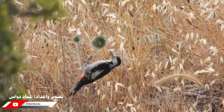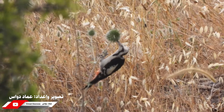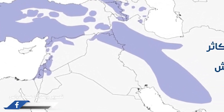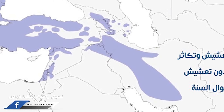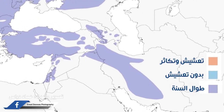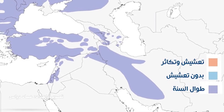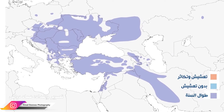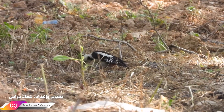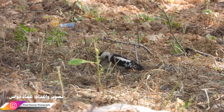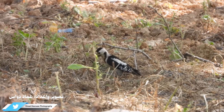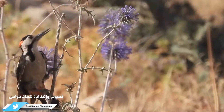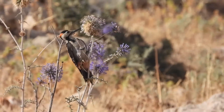يتركز وجود نقار الخشب السوري في قارتي أوروبا وآسيا. أما في المشرق العربي فيتواجد في النصف الشمالي من فلسطين وأجزاء متفرقة من بلاد الشام والعراق، كما يتواجد في إيران وتركيا. وهو ليس من الطيور المهاجرة، إذ يتواجد مقيماً على مدار السنة. وينتشر في مناطق الغابات والحدائق المنزلية والمتنزهات العامة وبساتين اللوز والزيتون والخروب، وكذلك في المناطق الزراعية ومحيط المناطق المبنية في الريف.